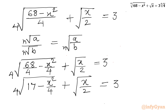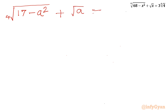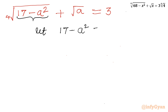Now I will use substitution. Notice that x/2 is present, and its square is x squared over 4. So let x/2 equal A. The equation becomes: 4th root of (17 minus A squared) plus square root of A equal to 3. For the next substitution, let the radicand 17 minus A squared equal B squared, so 17 minus A squared equals B squared.